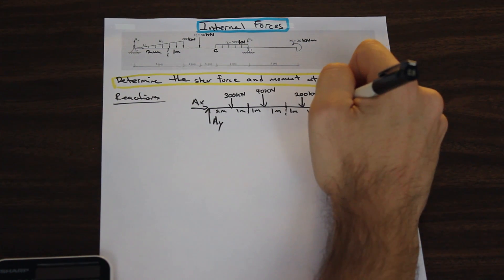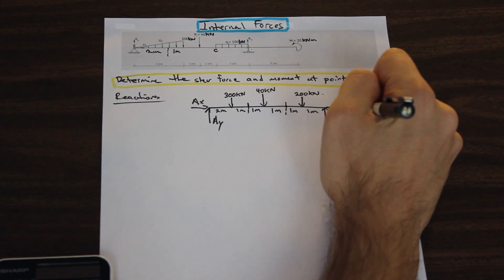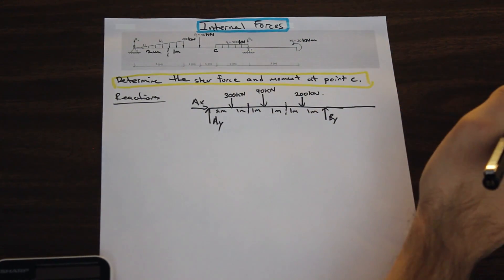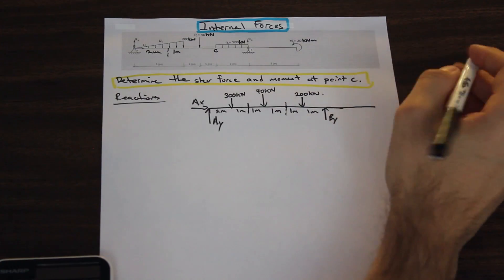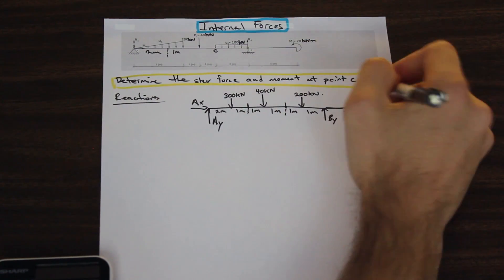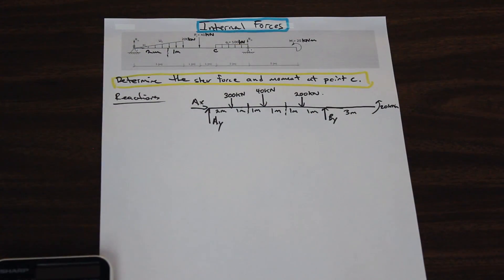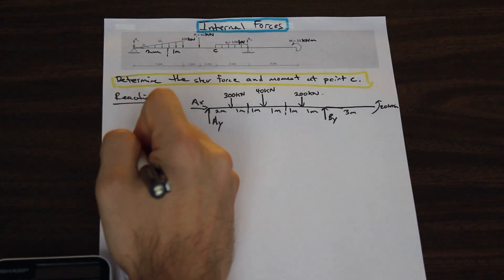We'll call that BY. And we'll just extend this beam a little further. And then we have 3 meters with nothing there except the free moment at the end. And we have that as 20 kilonewton meter. Cool. So we've drawn our free body diagram, and we have everything we need to find the reactions.